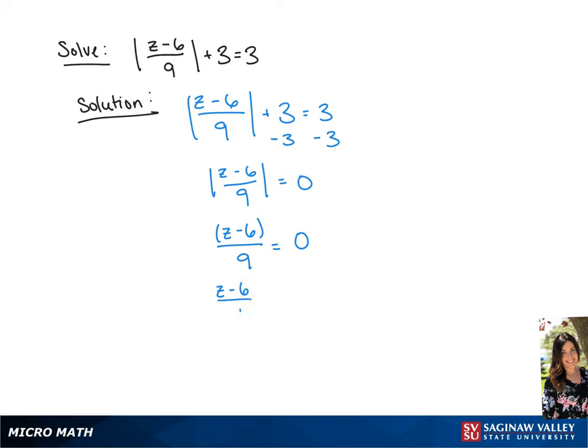To clear the fraction, we're going to multiply each side by 9. This will give us z minus 6 equals 0.